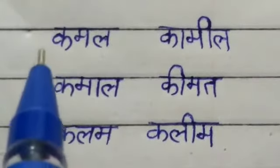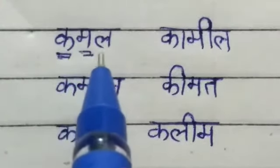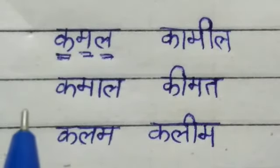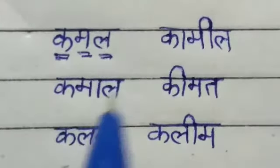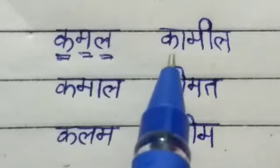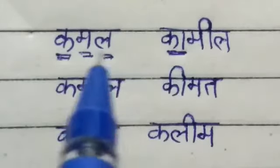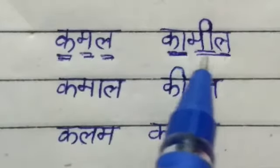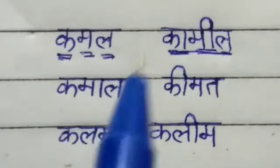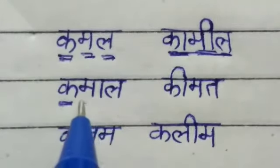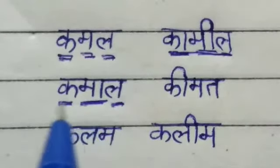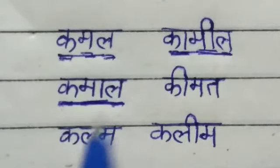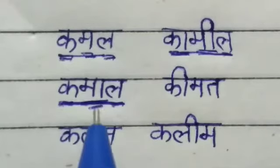For example, this is Ka. Ma La — Kamal. Understand the pronunciation: Kamal. This is Kamal. Ka Kana Ka, Ka Mi La — Kamil — Kamal. It is a name. Ka Ma, Ma Kana Ma, La — Kamal. This is Kamal, because there is Kana.